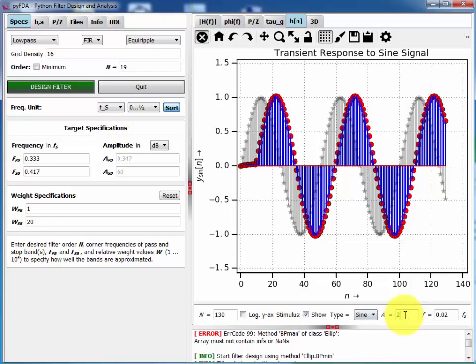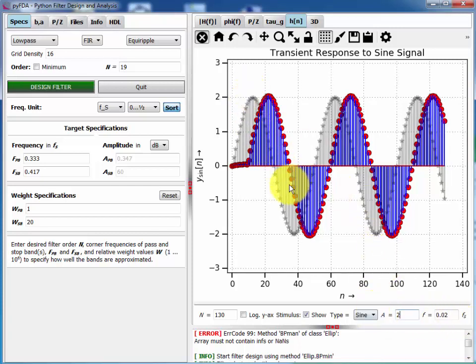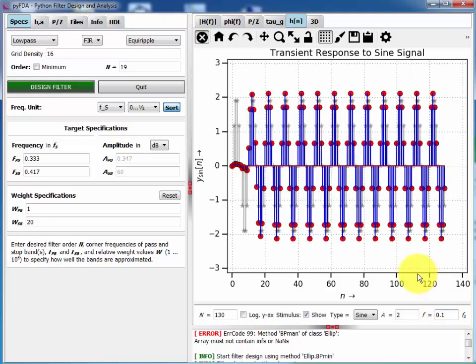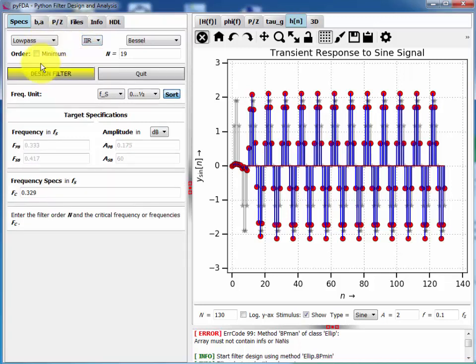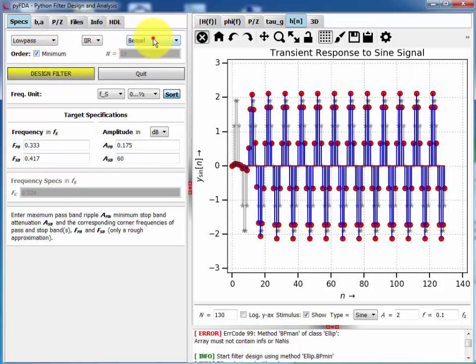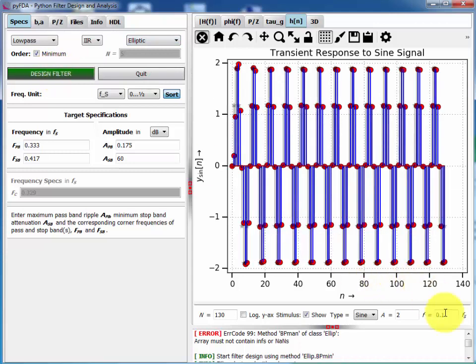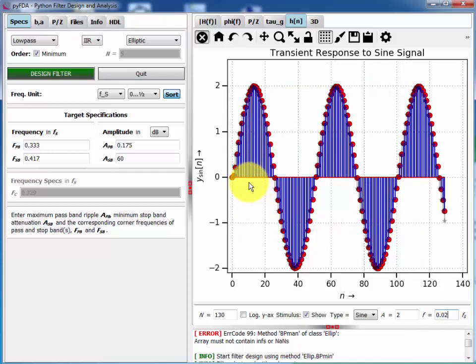You could vary the amplitude or the frequency of your stimulus. We'll design an IIR filter before we go to the next tab. Here you can see that IIR filter has a lower group delay for this frequency.